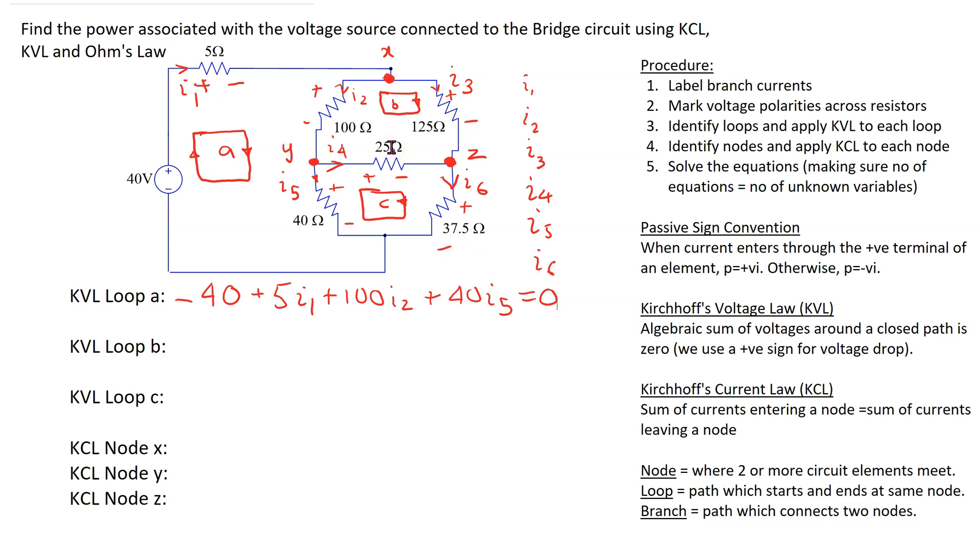Let's do the same for loop B. Starting here, plus to minus is a voltage drop, so we get 125 I3. Next we are going from minus to plus, which is a voltage rise, so this is minus 25 I4. Then we have another voltage rise going from minus to plus, so this is minus 100 I2 equals 0.